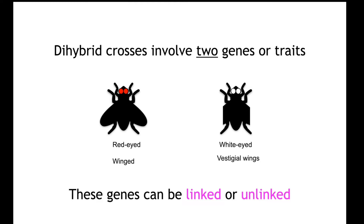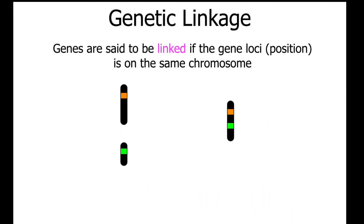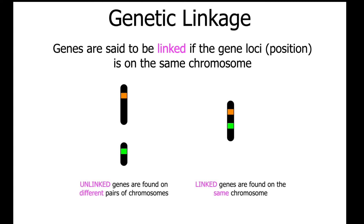When dealing with two genes or traits, those genes can be considered as linked versus unlinked. If the genes are linked, it means the gene loci — the position of the gene — are on the same chromosome, as shown on the right. If they are unlinked, the gene loci are on different chromosomes, as shown on the left.